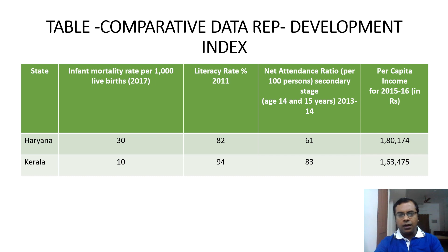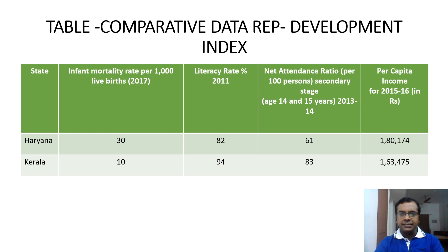One state is Kerala and it is being compared with Haryana. In Haryana, as per the 2017 survey, the infant mortality rate per thousand live births was 30, compared to Kerala which is as low as 10. Looking at the literacy rate as per the 2011 census, the Haryana figure is 82 compared to Kerala's 94.